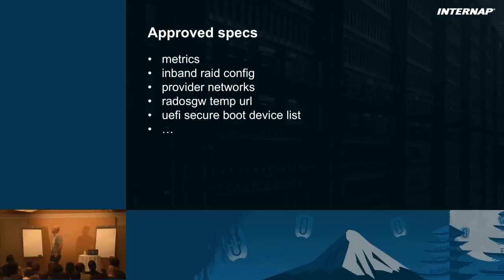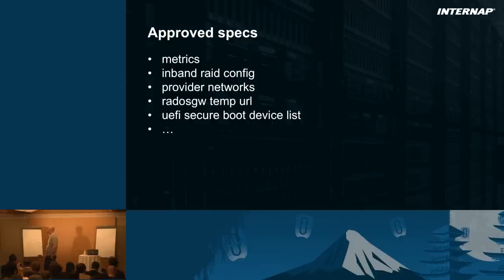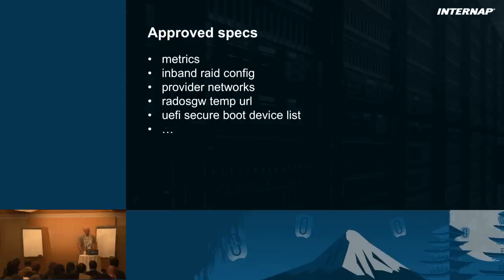There's a lot of traction in Ironic — many new specs are being approved for the next cycle. Some of those are things we did on our side because the specs weren't ready in time. The cost is that we'll probably have to reintegrate our code using those specs to make sure our code is supported by the community and doesn't just exist in our OpenStack deployment.